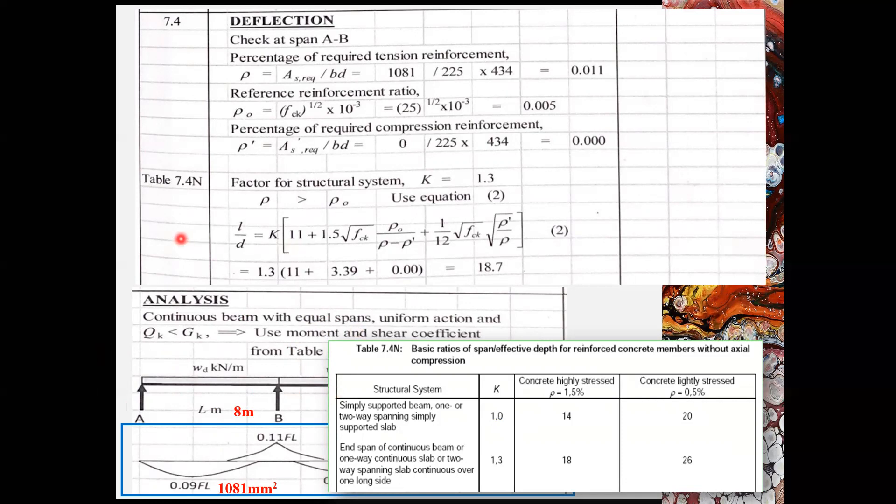So you can input the k. And we also need the fck, the characteristic strength of the concrete. Rho naught, rho and rho prime, which you have obtained earlier. So by solving the equations, you get the allowable l over d, which is 18.7 in this case.